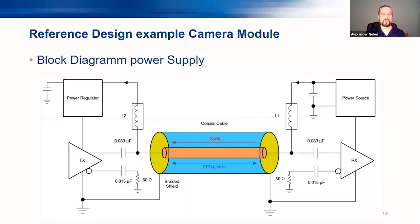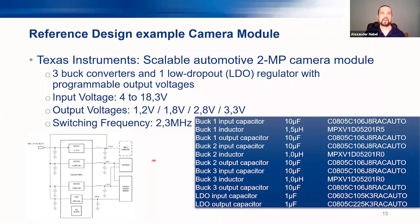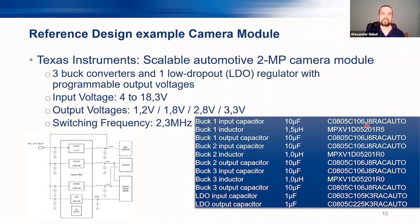Looking at the block diagram, I focused on the power supply of this camera module, which gives many opportunities for Kemet components. The power supply includes three buck converters and one LDO with programmable voltage outputs. Input voltage is 4 to 18.3V, switching frequency is 2.3 MHz. From the BOM in the Texas Instruments data sheet, the power supply alone gives more than 10 items where Kemet electronics solutions can be found — all small SMD size with full automotive certification.